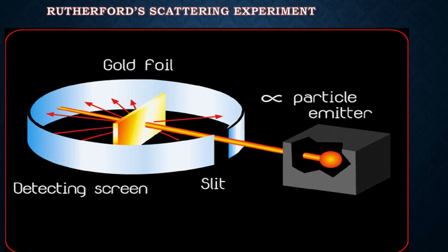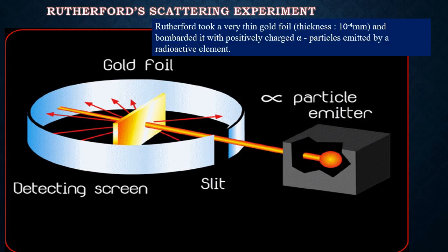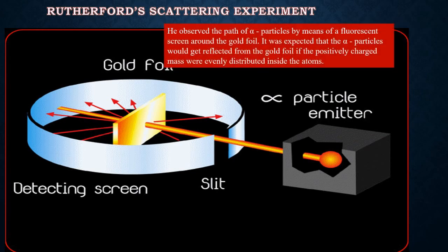The image shows the diagram of Rutherford's experiment. Rutherford took a very thin gold foil — thickness about 10 raised to minus 4 millimeters — and bombarded it with positively charged alpha particles emitted by a radioactive element. He observed the path of alpha particles by means of a fluorescent screen around the gold foil. It was expected that the alpha particles would get reflected from the gold foil if the positively charged mass were evenly distributed inside the atoms.